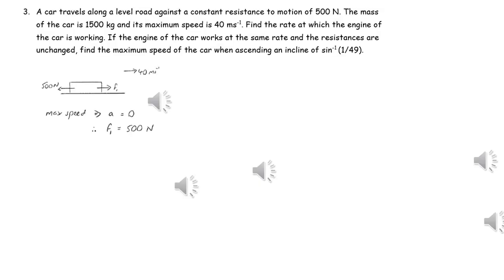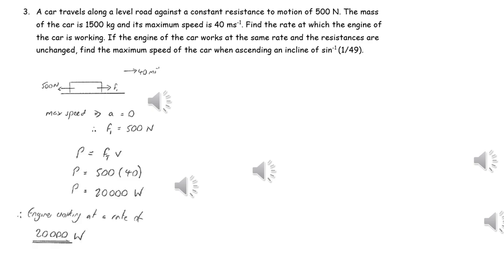We first of all need to find the tractive force of the vehicle. Since it is going at maximum speed, there is no acceleration, so the tractive force is just equal to the resistance. The rate at which the engine of the car is working is the power of the engine, so we can just use power equals tractive force times velocity to evaluate this.